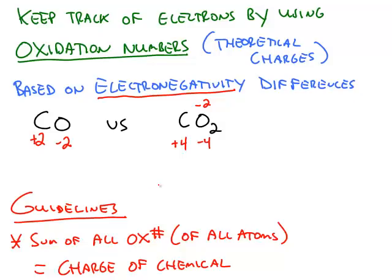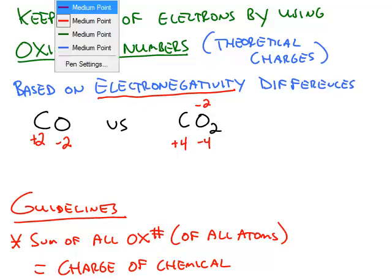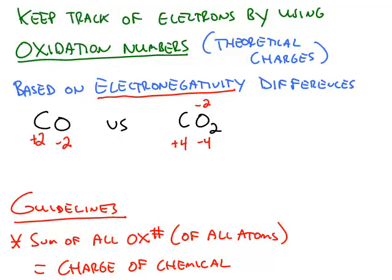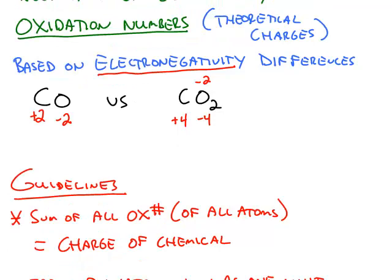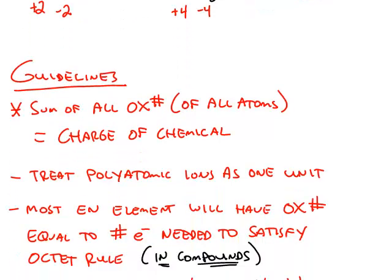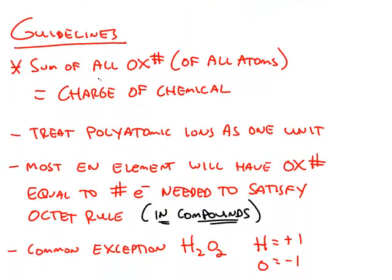We're going to use oxidation numbers quite a bit. They're always based on the electronegativity of the elements, and there are some other guidelines you can use. The most important guideline is that the sum of all of the oxidation numbers of every atom in the chemical, when added together, must equal the charge of the overall chemical.